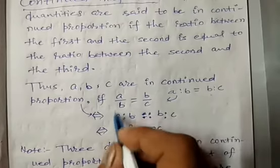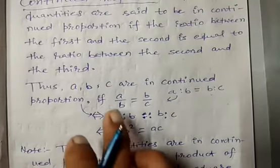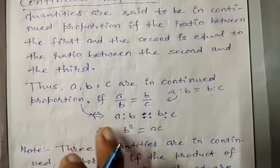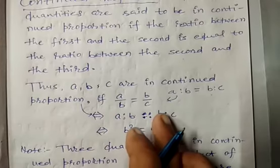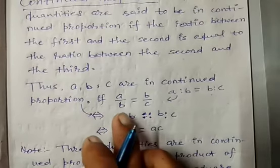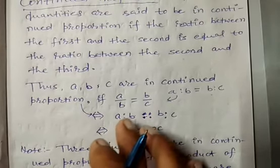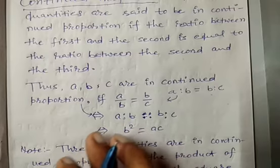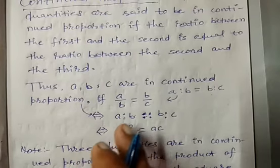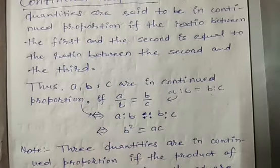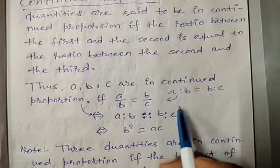Fraction में convert करने पर, A/B = B/C। इसका मतलब यह हो गया कि यह ratio इस ratio के proportional हो गया। जब दो ratio आपस में proportional होते हैं, तो product of extremes is equal to product of means हो जाता है।